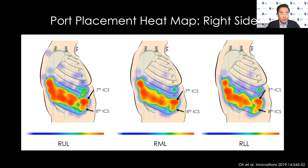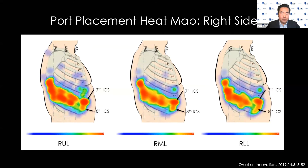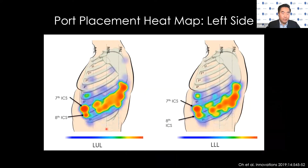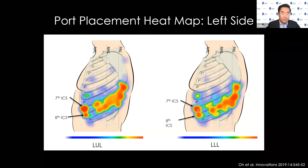The anterior port — which is the stapler port and the dissecting hand on a right-sided approach — is placed by most surgeons in the seventh intercostal space, even for the middle lobe and lower lobe. So even when the camera is in the eighth intercostal space, the anterior port is typically in the seventh. We repeated this process for the left-sided approach and saw similar themes: for the upper lobe, a split between seventh and eighth for the camera, but for the lower lobe, most go into the eighth. There is again a lot of variability in the posterior port, and the seventh intercostal space remains the most common choice for the anterior port.